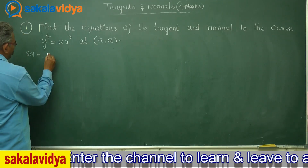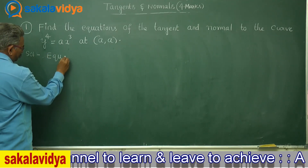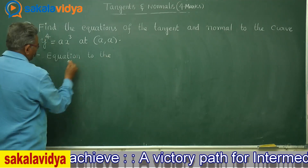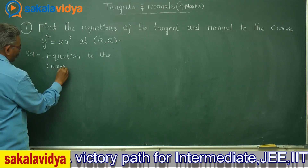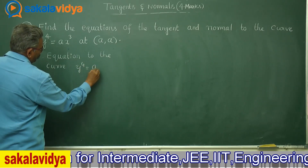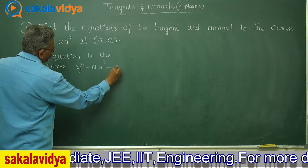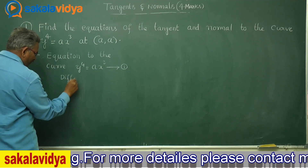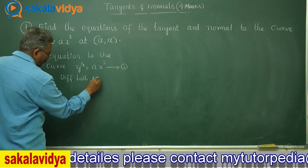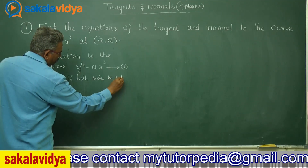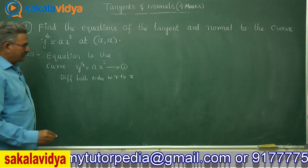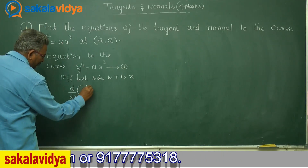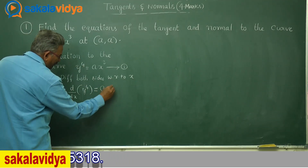Solution: the equation of the curve is y to the power 4 equals ax cube. This is equation (1). Now differentiate both sides of the curve with respect to x.